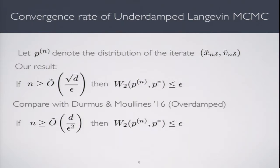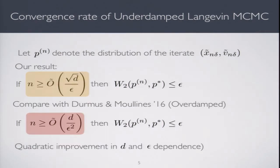Contrast this with the result by Dalalyan and Karagulyan in 2017, which was the best convergence rate for unadjusted overdamped Langevin diffusion under the same assumptions of smoothness and strong convexity. Their rate is, for ε-Wasserstein error, you need number of time steps to be d over ε². Both are upper bounds—we don't know if you could do better with overdamped. But this is the best known result. We have a quadratic improvement in d and ε for underdamped over overdamped.